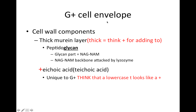Looking at the gram positive cell wall in detail — it has a thick murein layer, which is synonymous with peptidoglycan. The glycan part is made up of NAG and NAM, which are the sugar backbones of the cell wall. This backbone is what is attacked by lysozyme — the bond between these two sugars is cleaved by lysozyme. We also have teichoic acid, which is unique to gram positive. Think of the 't' in teichoic acid as a lowercase plus sign for gram positive.